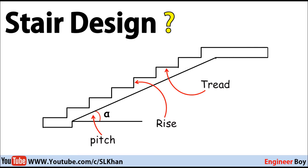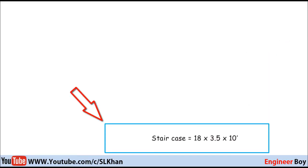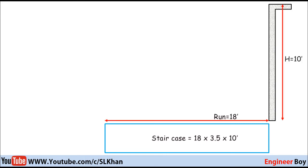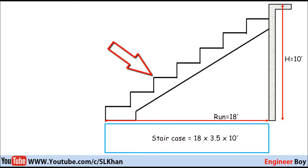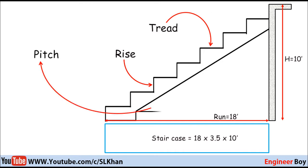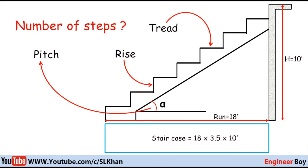In the next video I'll try to bring another video on double flight stair design. For now, our approach is only the single flight stair design. Suppose a staircase is given as 18 × 3.5 × 10 feet — this is the size of the staircase and we have to construct a single flight stair over here. How can we determine different data for this stair? The different data means: what should be the tread, the rise, the pitch of the staircase, which is the angle the stair flight makes with the horizontal line, and how many number of steps there should be.